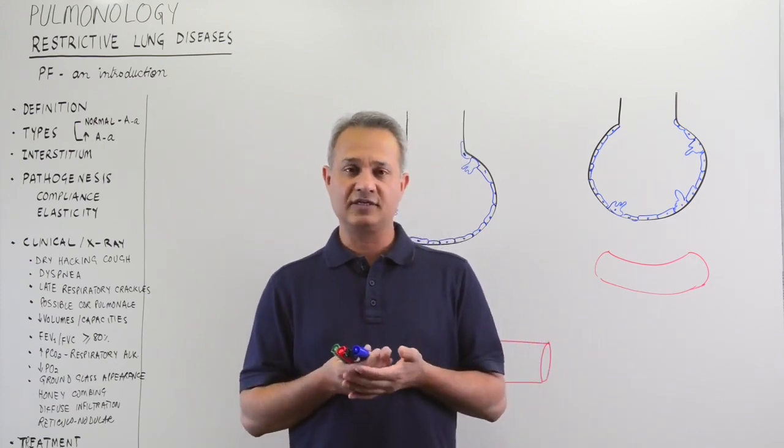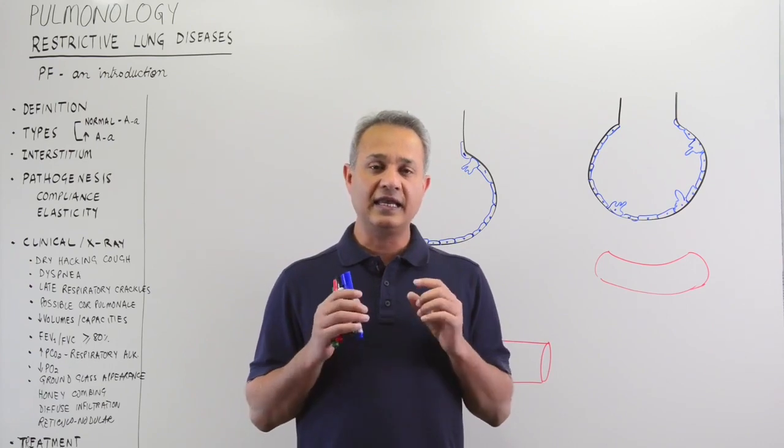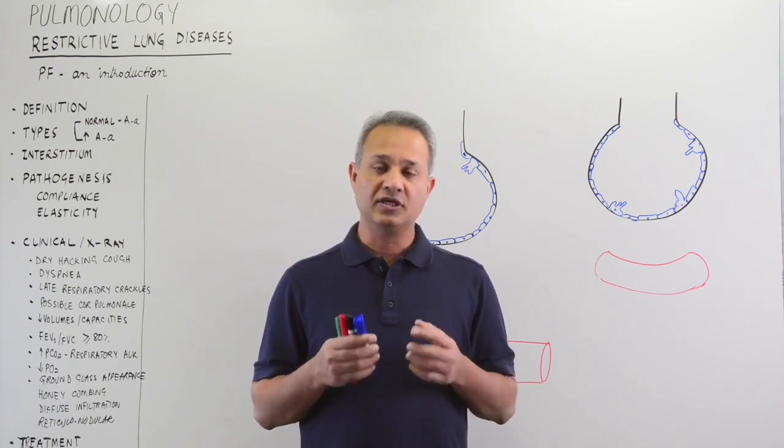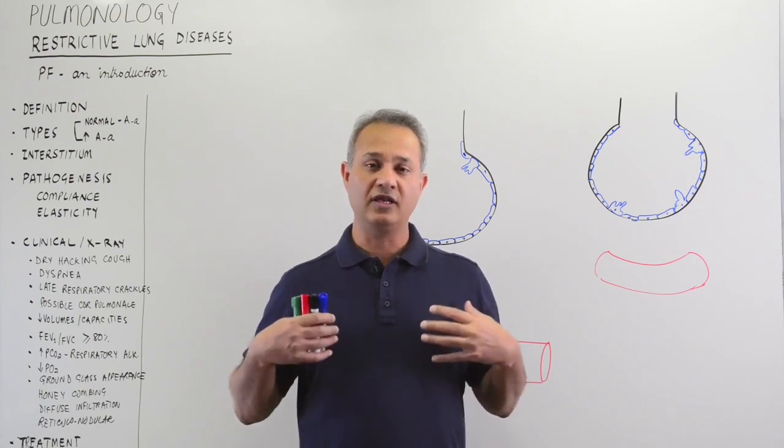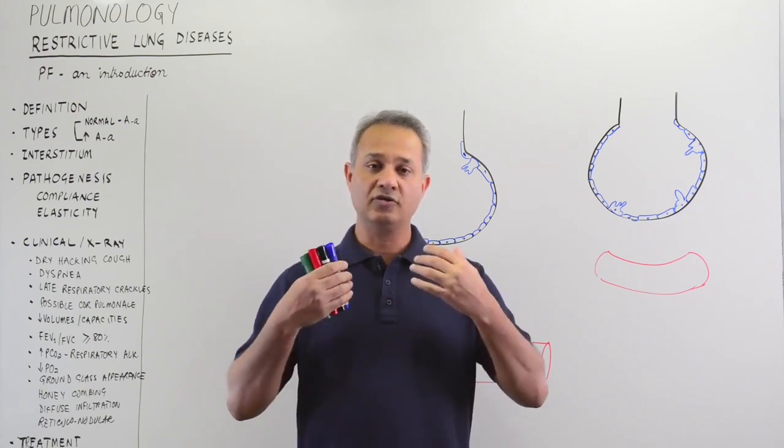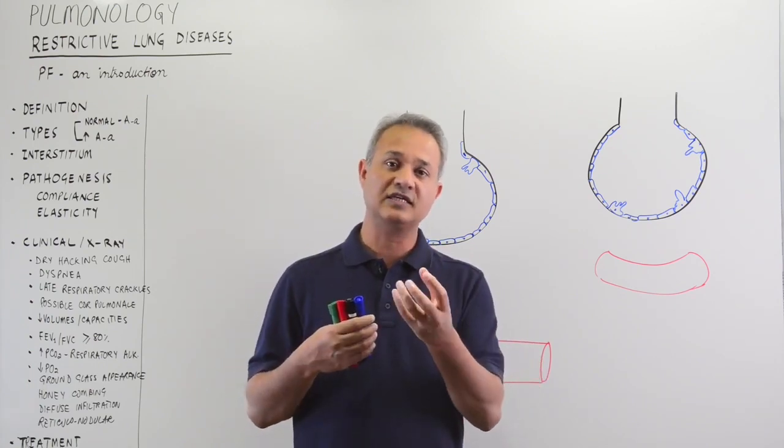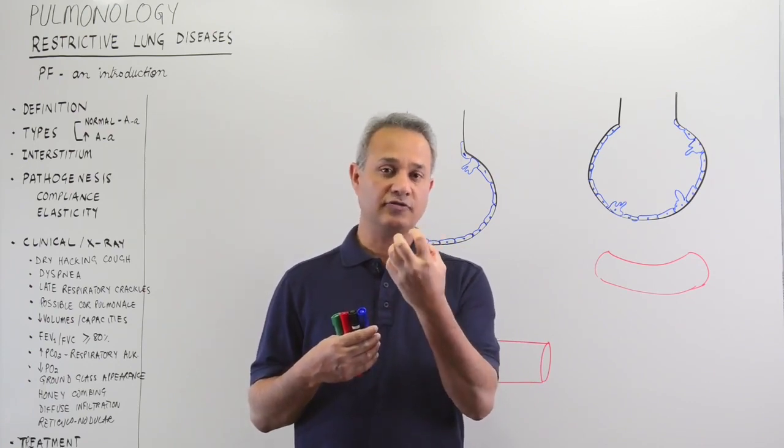Definition of the restrictive lung disease is simple. It is any condition in which there is not enough volume of the lungs left to allow the air to go in. So, there is a restriction to the amount of air going in.